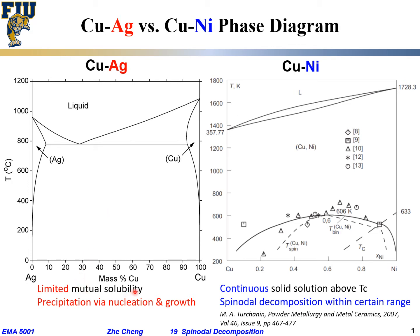Limited mutual solubility — that is indicated by the solubility. At, let's say, 600 degrees C, what's the solubility of copper in silver? Look at the phase diagram. At 600 degrees C, the solubility of copper in silver is roughly three to five percent by mass. And at 600 degrees C, what's the solubility of silver in copper? Similar — around three percent, roughly. That is limited mutual solubility.